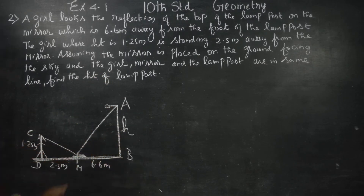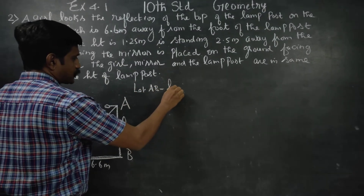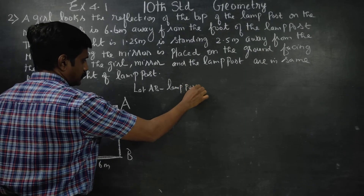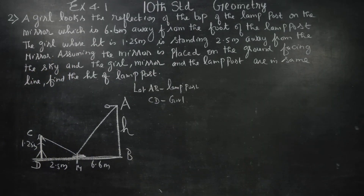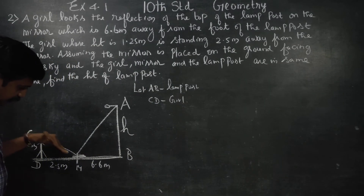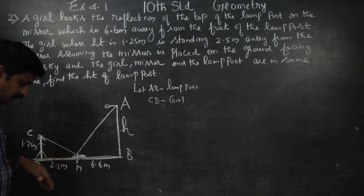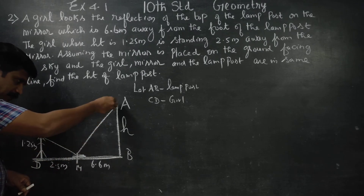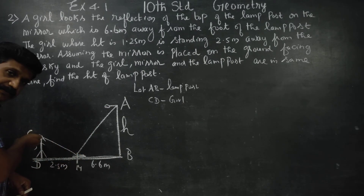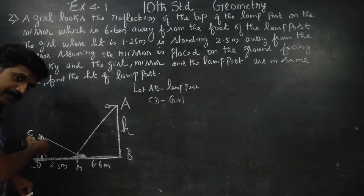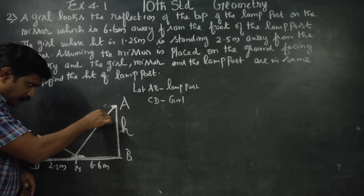Let AB be the lamp post and CD be the girl. Here is the lamp post. This is the mirror. Light is reflected from the mirror — it is reflected light.